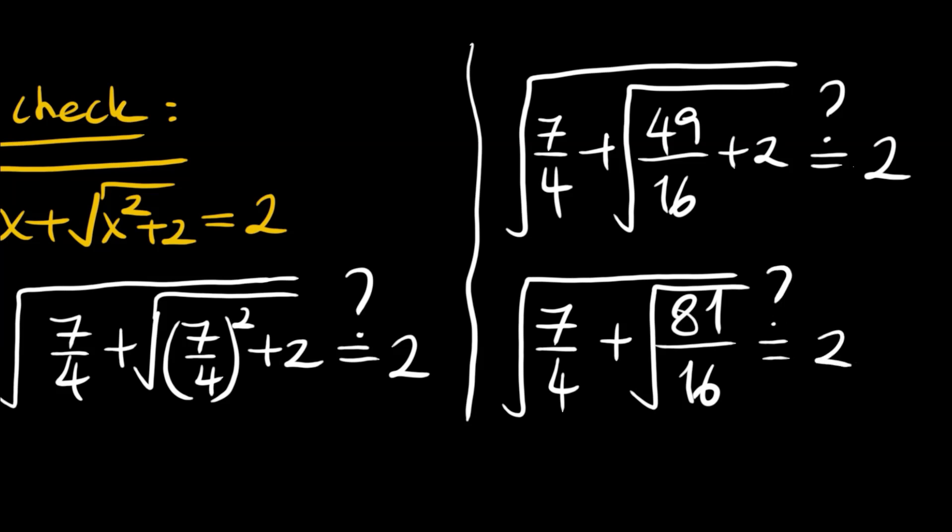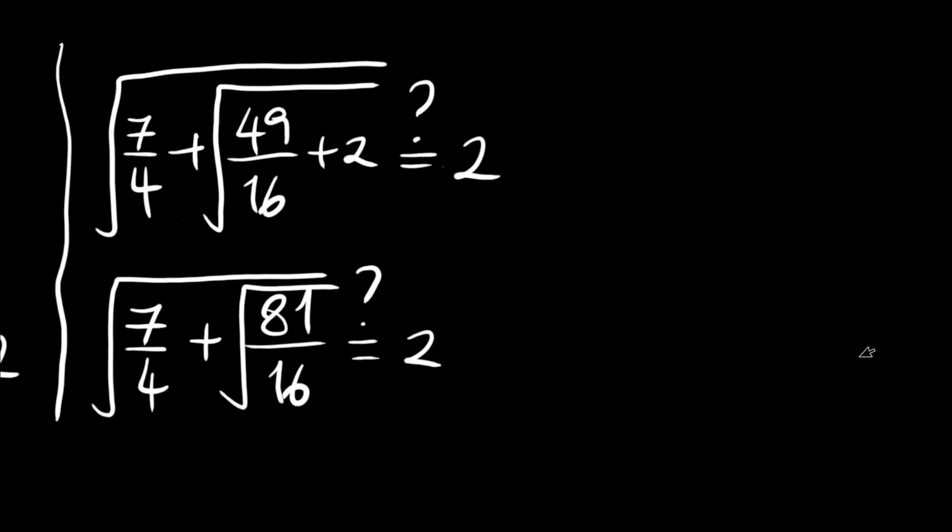Now, 81 over 16 is 9 over 4. The square root equals 9 over 4. Then 7 over 4 plus 9 over 4 becomes 16 over 4, which is 4.